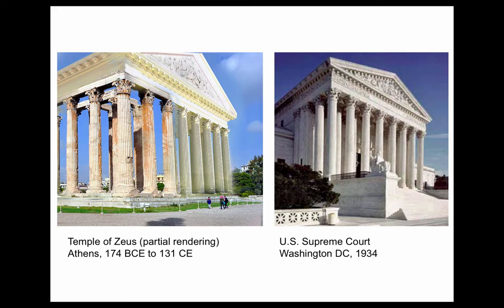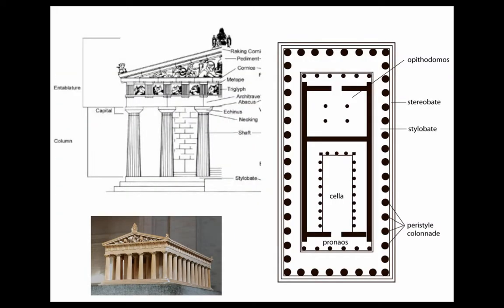Why would a student 150 years ago have to know this in great detail? Because this is a temple of Zeus — and this is the United States Supreme Court, 1935. Until modern architecture, we were building these things. The 42nd Street Library, the Metropolitan Museum, Grand Central Station — they all have Greek and Roman columns on them. We were building this stuff into the 20th century. Today we just get a general idea of what it was about; 100 years ago you would have to not only know it, but be able to do it.